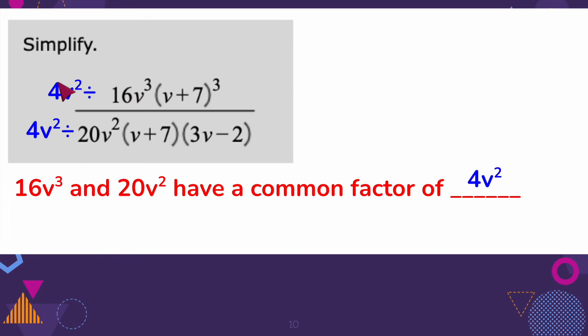So 16 divided by 4, I get 4. V cubed divided by V squared. Remember, exponent rules means that I'm going to go 3 minus 2, and I get 1. So I'm left with 1V. 20 divided by 4 is 5, and V squared divided by V squared cancels out. So now I can look at my binomials.